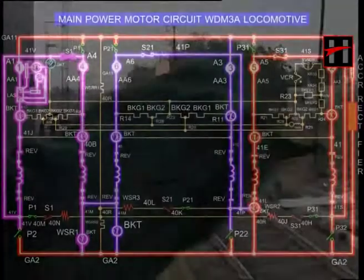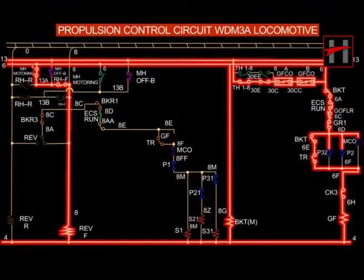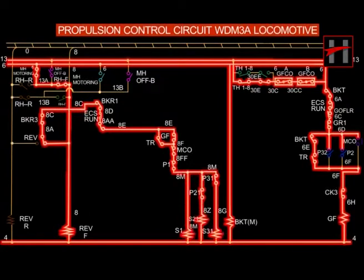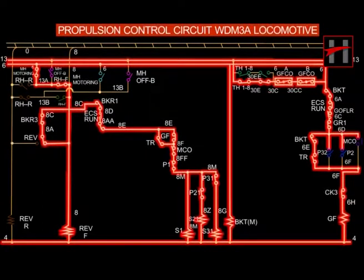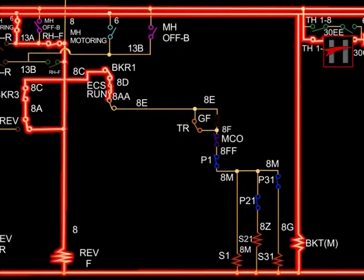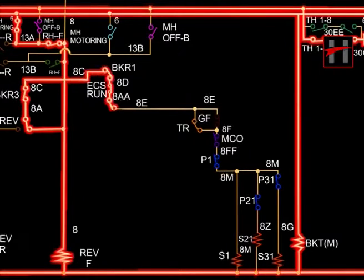At speeds below the specified loco track speed, higher torque is required. To achieve this, the traction motors are connected in a two series three parallel combination through three series power contactors, each having two traction motors in series across the traction alternator. This is called the series parallel or 2S3P combination. On forward position of the reverser handle, the current from cable number 8 flows via the interlocks of forward reverser 88A, BKR, ECS, TR, GF, MCOS, P1, cable number 8M, the operating coils of the series power contactors S1, S21 and S31, and completes the path through cable number 4.